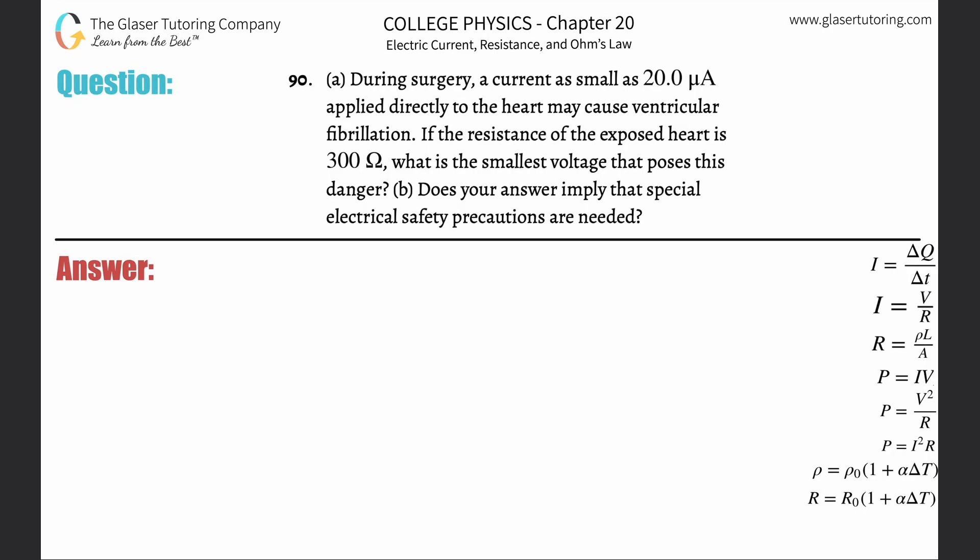Number 90, letter A. During surgery, a current as small as 20 microamps applied directly to the heart may cause ventricular fibrillation. If the resistance of the exposed heart is 300 ohms, what is the smallest voltage that poses a danger?